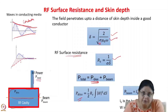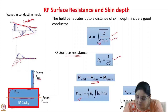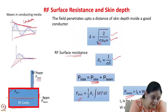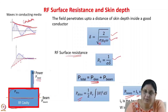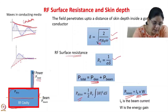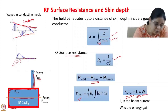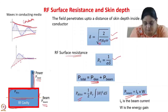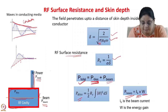Whatever power you feed into the cavity, part of it is dissipated in the structure, and part goes to the beam. Beam power is calculated as the beam current multiplied by the energy gain in the cavity. The beam is a flow of charged particles, and moving charge constitutes a current. Part of the power fed into the cavity is dissipated in the structure and part is stored in the cavity fields and given to the beam. Total power input to the cavity equals the sum of dissipated power and beam power.